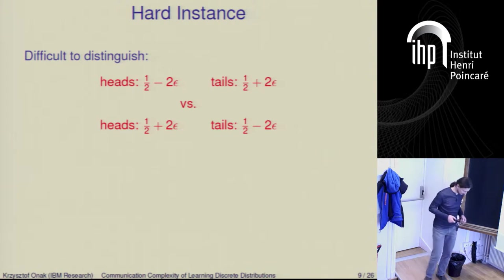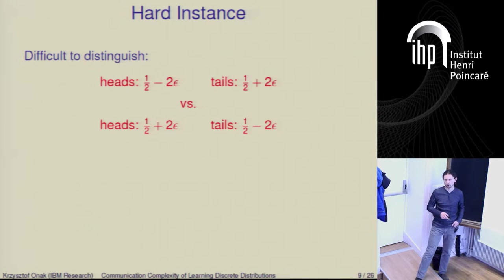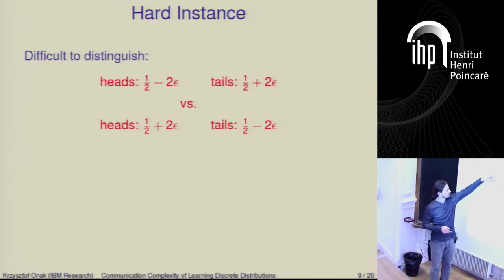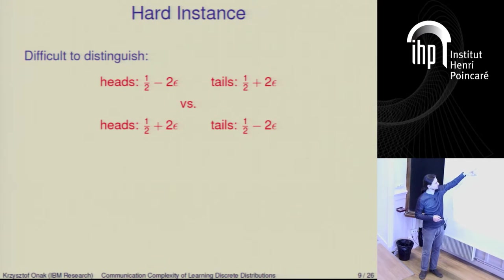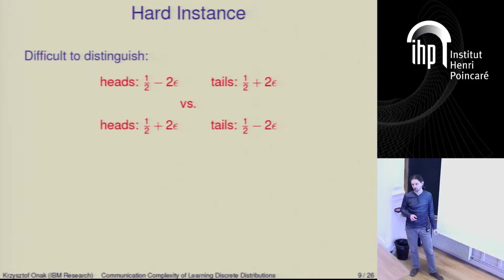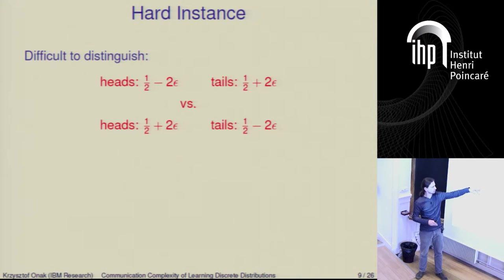Instead of that, we're going to go over a simple information-based proof. The following two distributions are going to be difficult to distinguish. In the first one, the probability of heads is one half minus two epsilon, and the probability of tails is one half plus two epsilon. The other distribution is slightly biased in the opposite direction: probability of heads is one half plus two epsilon and probability of tails is one half minus two epsilon. More formally, the hard instance is: the probability of heads is one half plus delta times two epsilon, where delta is selected uniformly at random from {-1, +1}.